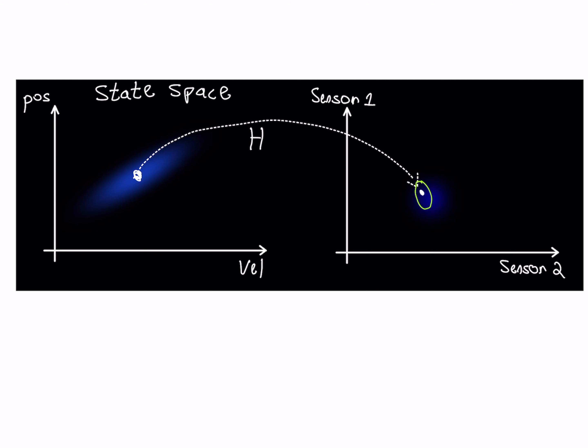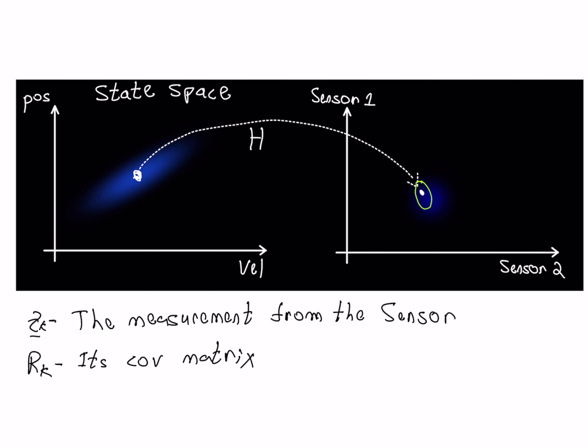The sensor measures what it needs to, but it contains inherent noise. We will call the covariance of this uncertainty — i.e., the sensor noise — rk. The distribution has a mean equal to the reading we observed, which we call zk. So zk is the measurement we are getting from the sensors, and it could be in one dimension, two dimensions, etc. — zk is a vector.